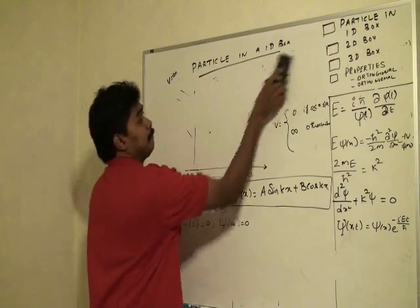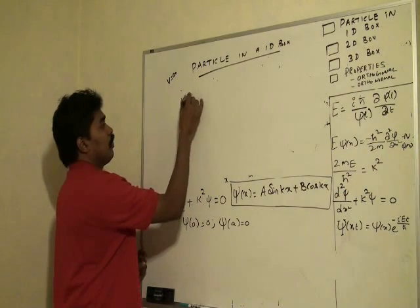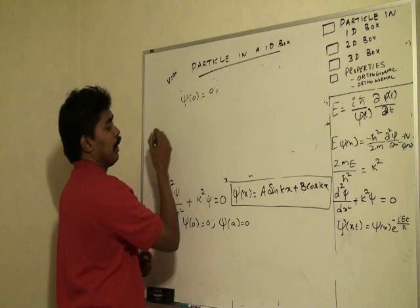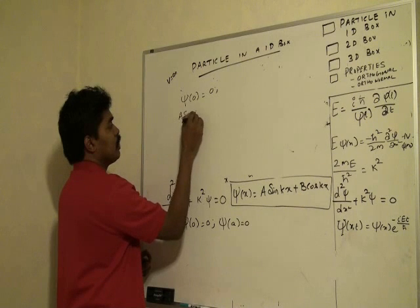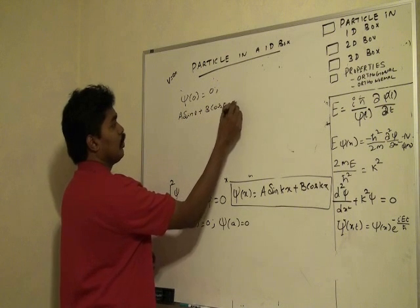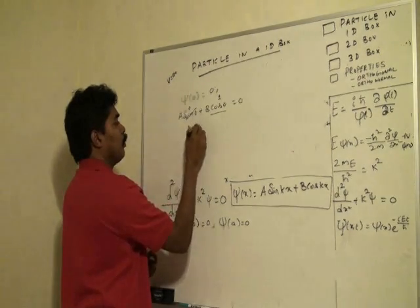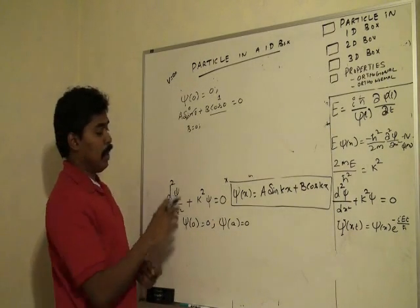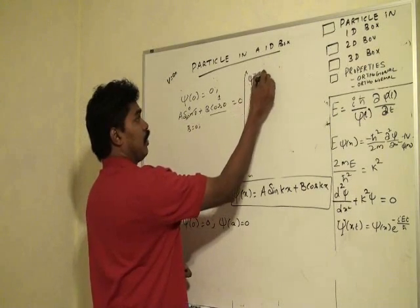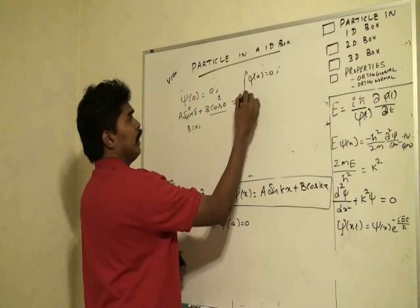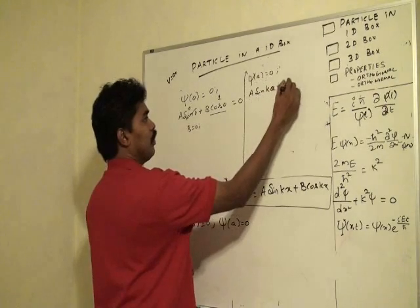Applying ψ(0) = 0, we get A sin(0) + B cos(0) = 0, which gives B = 0. Then applying ψ(a) = 0, it becomes A sin(ka) = 0.